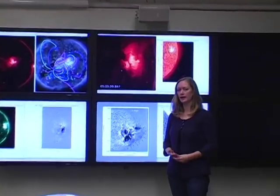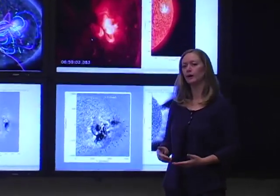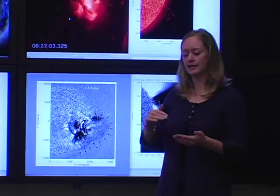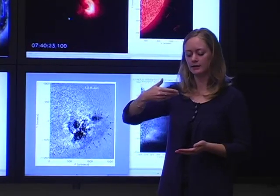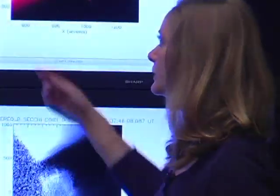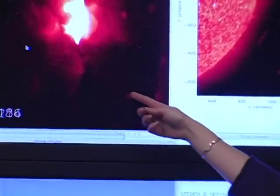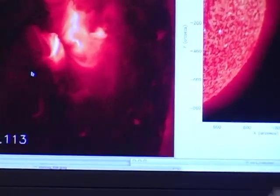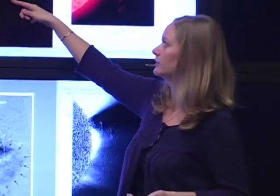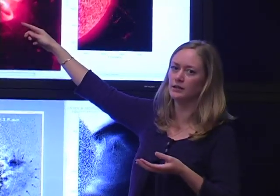Using the XRT data combined with the STEREO extreme ultraviolet data, what we actually understand is that the coronal mass ejection moves predominantly to the south as the coronal wave moves predominantly to the south due to the driving of this filament eruption that starts the whole eruption.